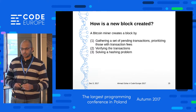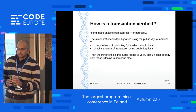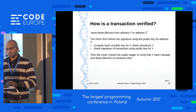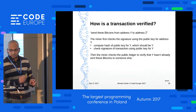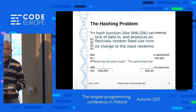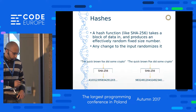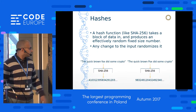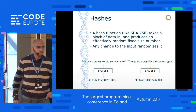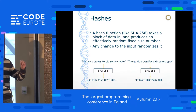How can the transaction be verified? First, a miner checks the signature of the key of address Y, then computes the public key of Y and verifies the signature using that public key. Hashing is the encryption methodology used in blockchain. It's a function — like SHA hashing algorithms — that encrypts the data. If you see any minor changes, you'll find the hashing output changes, which means your data had been altered without knowing the current state of the data.